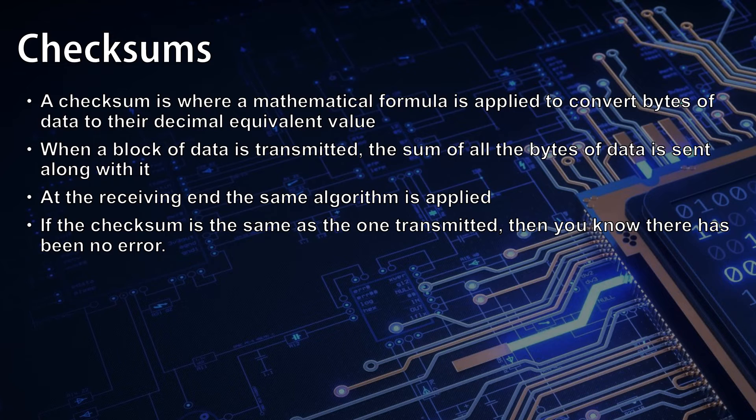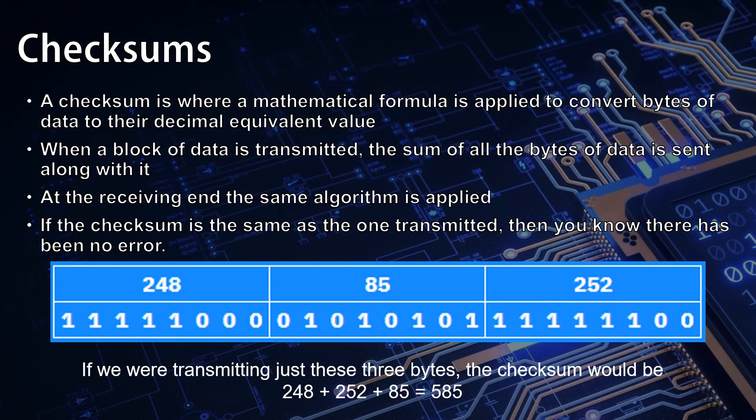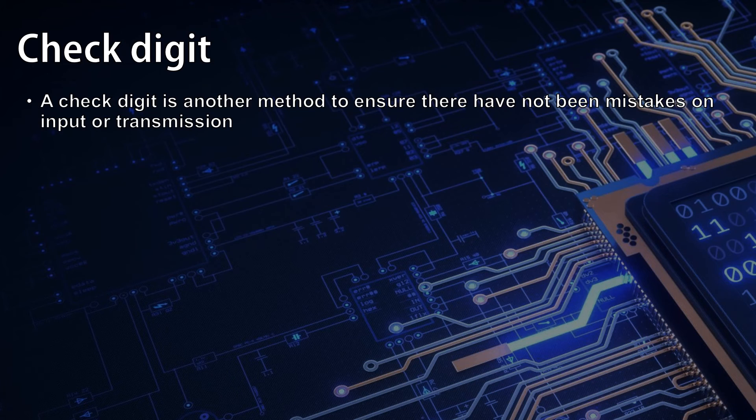If we were transmitting just these three bytes here, then the checksum that would be sent along with them would be the sum of all their values, which is 585.